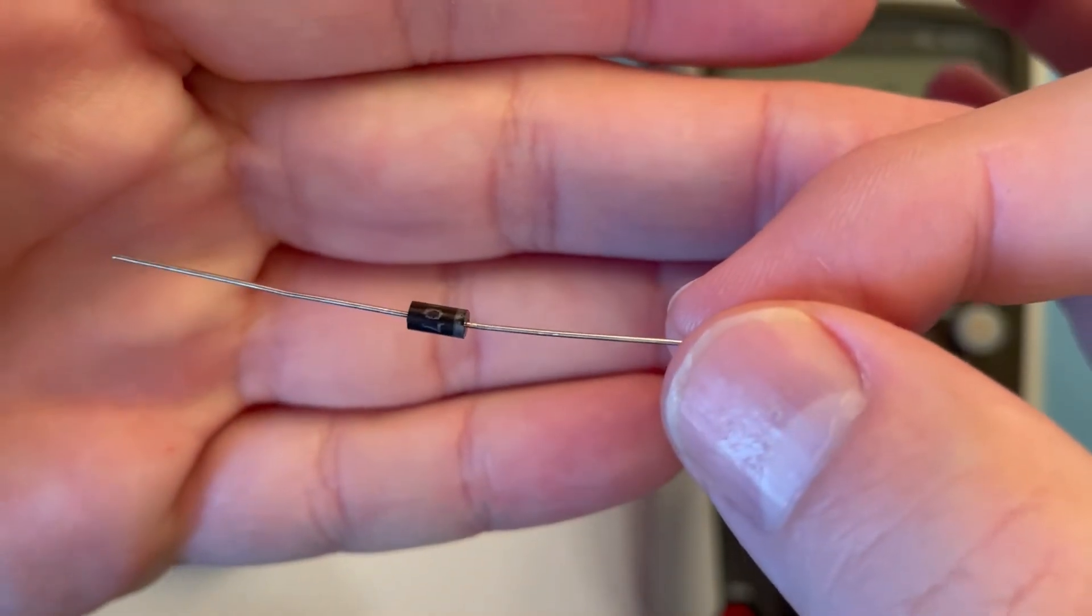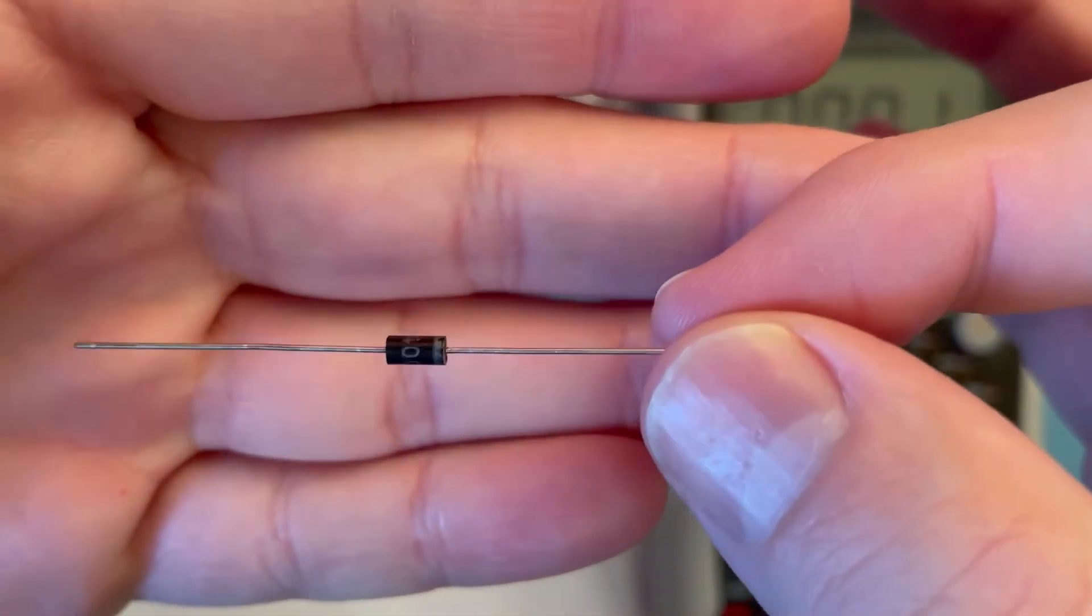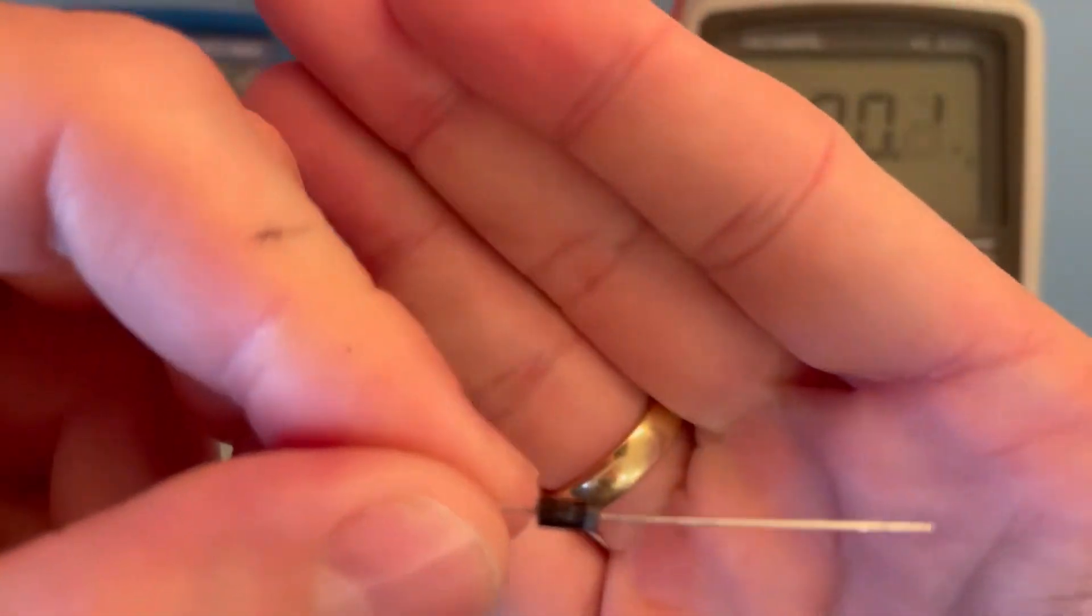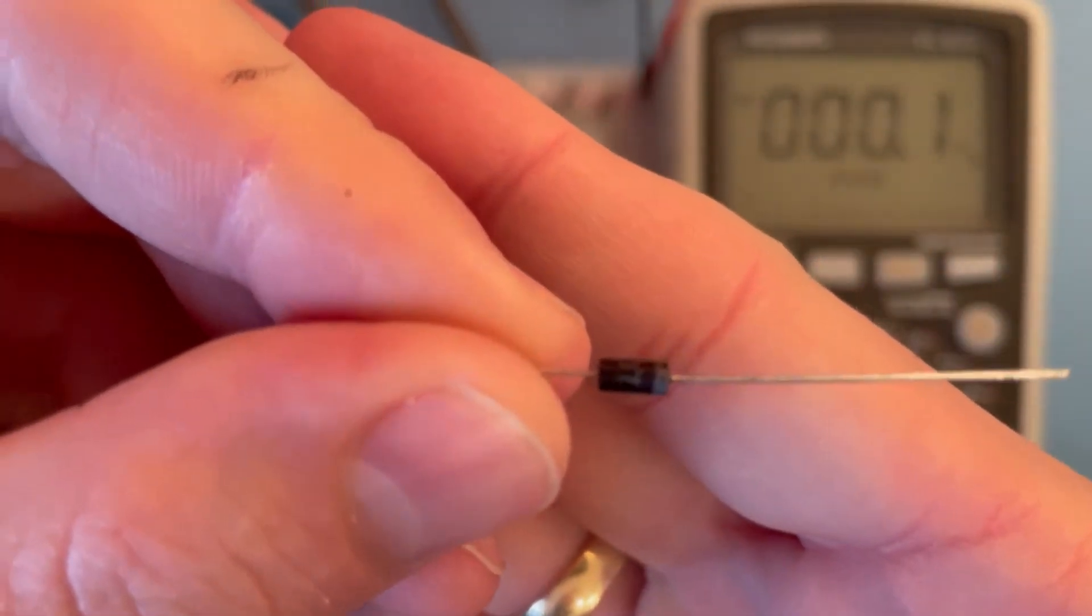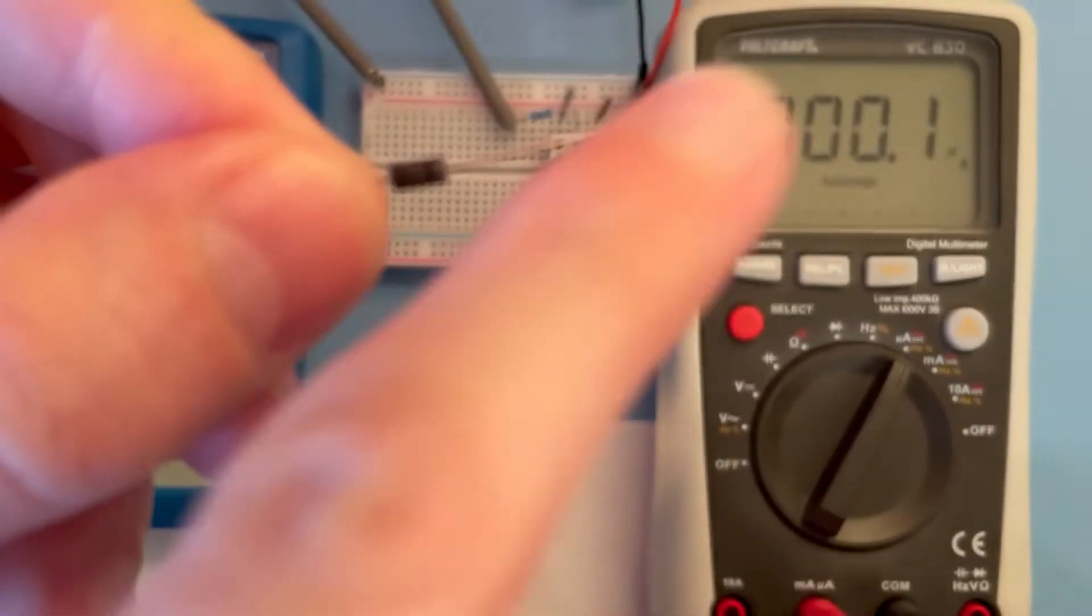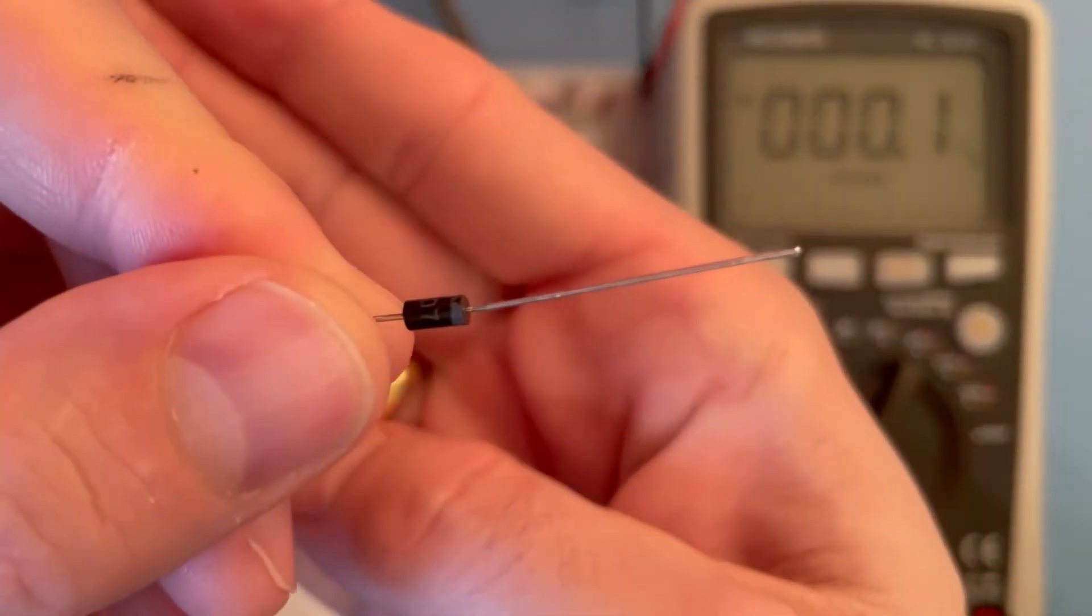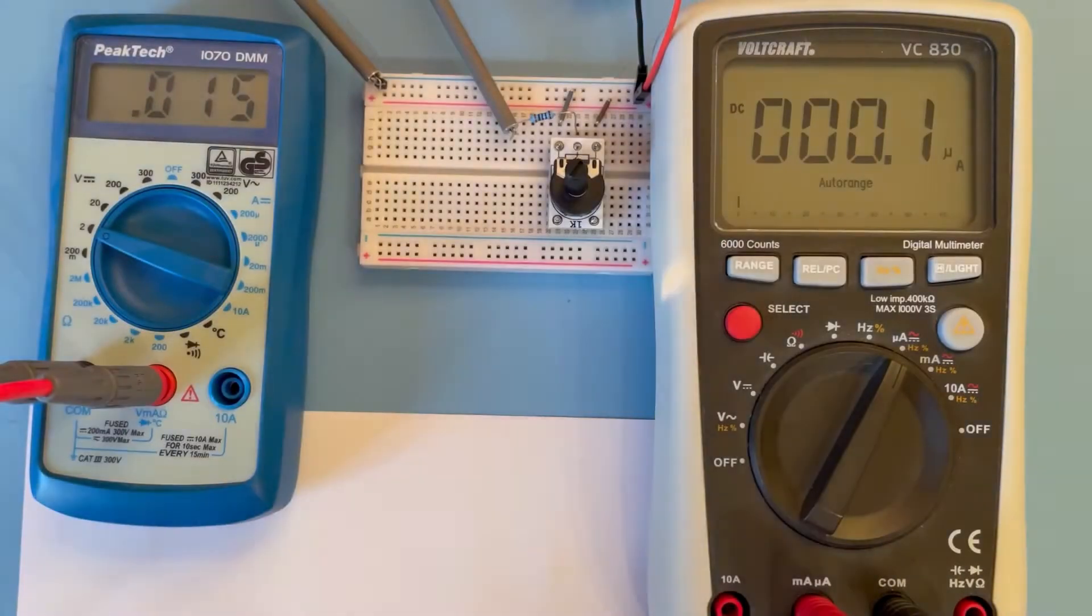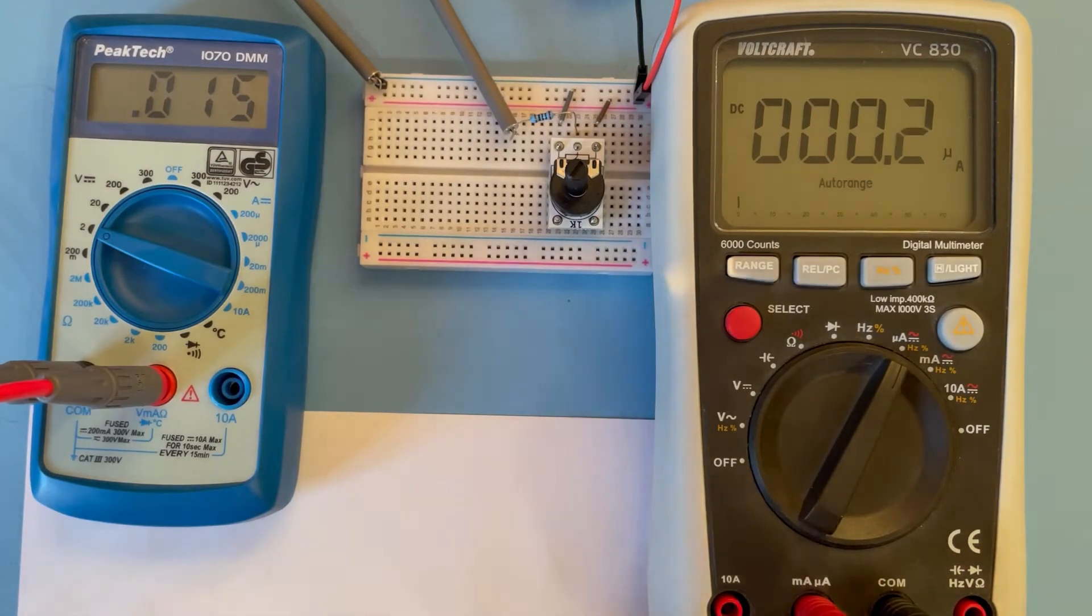Here we have a 1N4007 regular diode. The gray marker is where the forward direction would go, so in this direction. One can also say that's where the cathode should be.